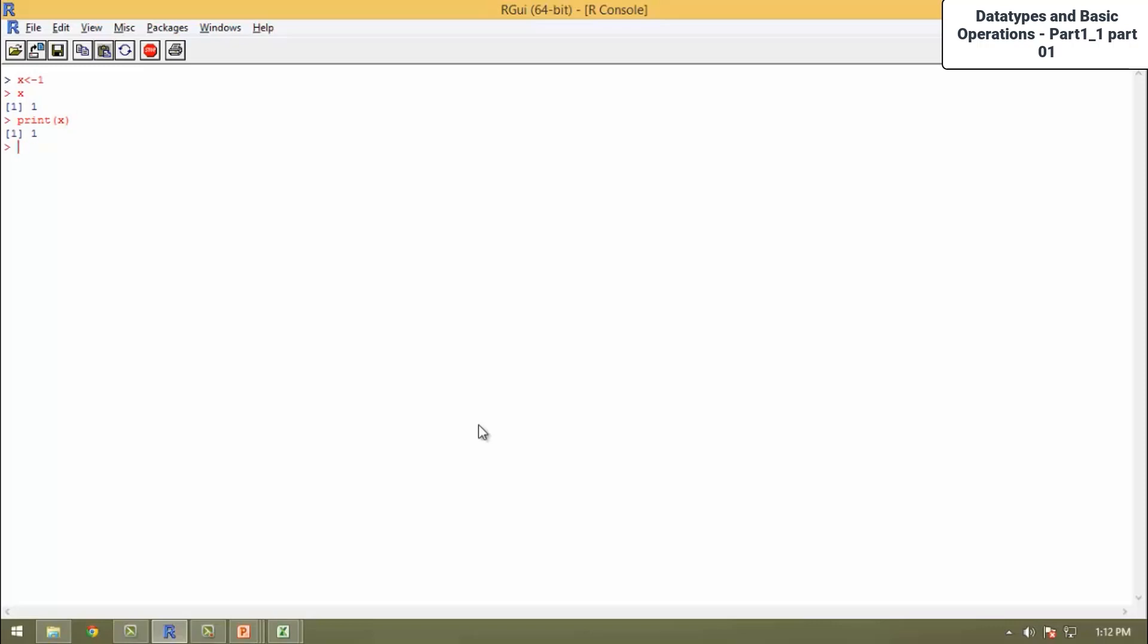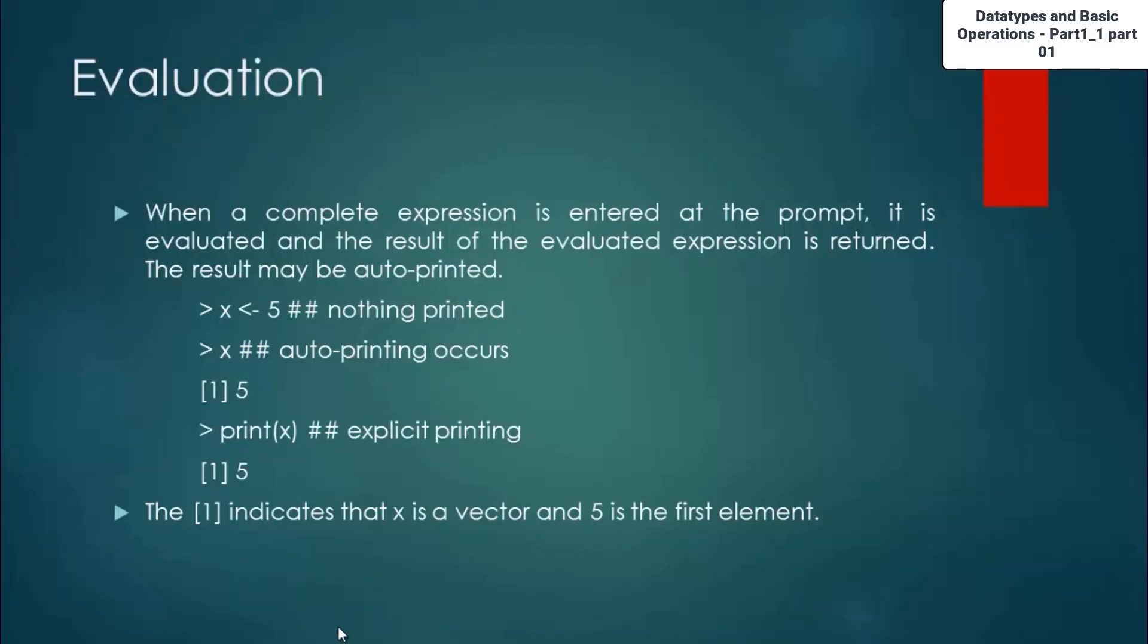There is one more thing I wanted to tell you here. A shortcut key is available in R to clear the screen in the console. Ctrl plus L will clear the console. Now moving on to the next thing, as I said earlier, the [1] indicates that x is a vector and 5 is the first element. Here I assigned value 1 in the example and 1 was the first element and that's why [1] was displayed in square brackets.